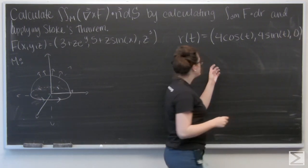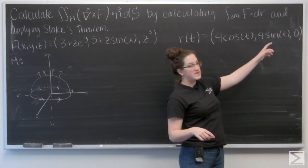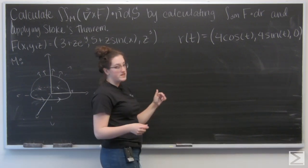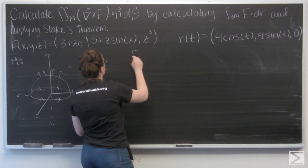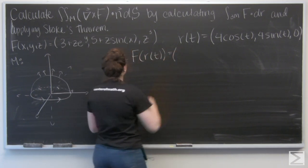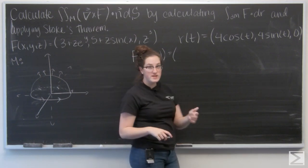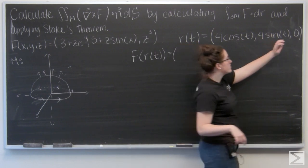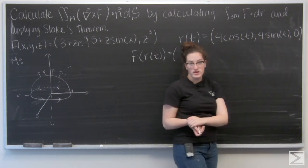So R of T is 4 cosine T, 4 sine T, 0. And now let's find F of R of T. So that just means in F, everywhere I see an X, I'm going to put in the I component of R, everywhere I see a Y, put in the J component, everywhere I see a Z, put in the K component.